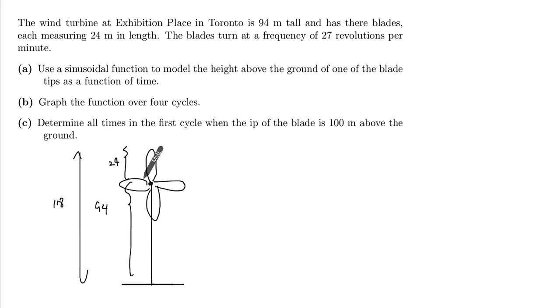That's the maximum height. The minimum height is going to be 94 minus 24, so that gives you 70.